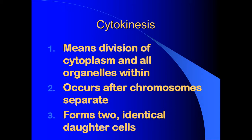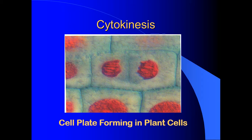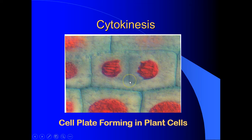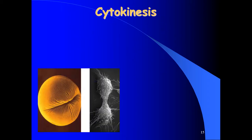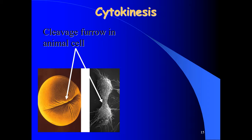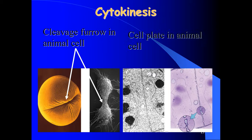This forms two identical things we call daughter cells. In cytokinesis, there's something called a cell plate that forms in plant cells — you can see the cell wall, the two new nuclei, and right down the middle the cell plate that's going to eventually split that single cell into two new ones. In animal cells we call this a cleavage furrow. The DNA has already duplicated and moved to the ends of the cell, and you can see where the cell is going to close in on itself and make a division between the two new parts.